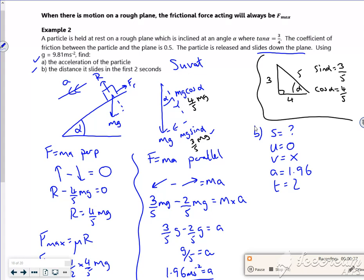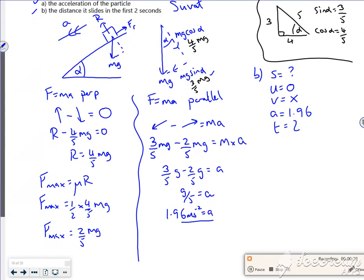So I need a SUVAT equation without v. So that's going to be s equals ut plus a half a t squared. So s would be zero times 2 plus a half times 1.96 times 2 squared. So s is going to be 3.92 meters.